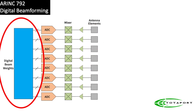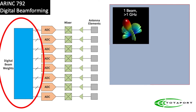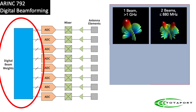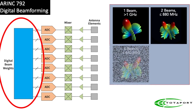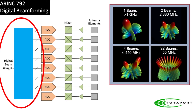Digital beamforming allows multiple beams to be formulated within the digital domain, with a composite signal applied to each element. This allows you to take full gain benefit from every element — each beam created is as good as another. With two beams there is a processing burden so you don't have quite the same bandwidth, but you have the same gain. This scales to four beams, and even 32.